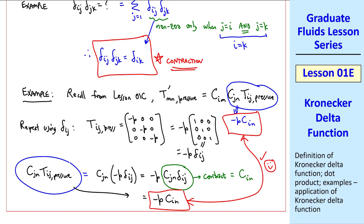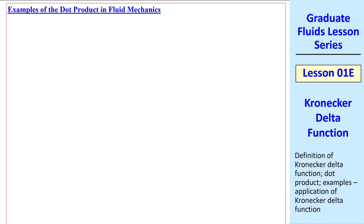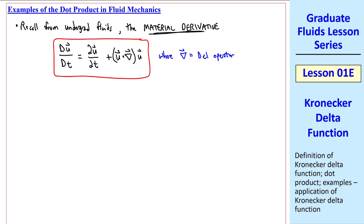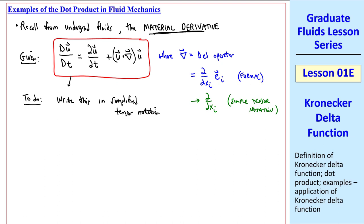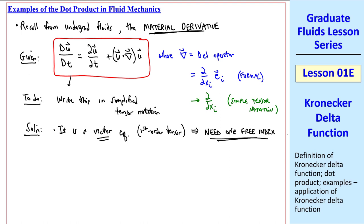Now I'll do some examples of the dot product in fluid mechanics. Recall from your undergrad fluids class the material derivative, also called the substantial or total derivative. We applied the material derivative to velocity vector u, and we wrote it out as del u del t plus u dot del u, where del is the del operator, which in formal tensor notation is del del xi, unit vector e i, or we write it as del del xi, in simplified tensor notation. What we want to do is write this expression in simplified tensor notation.